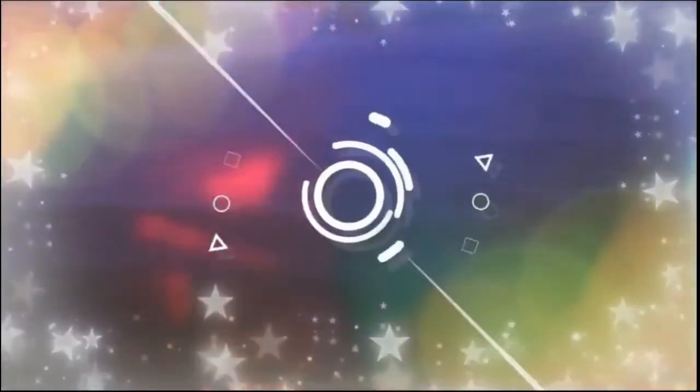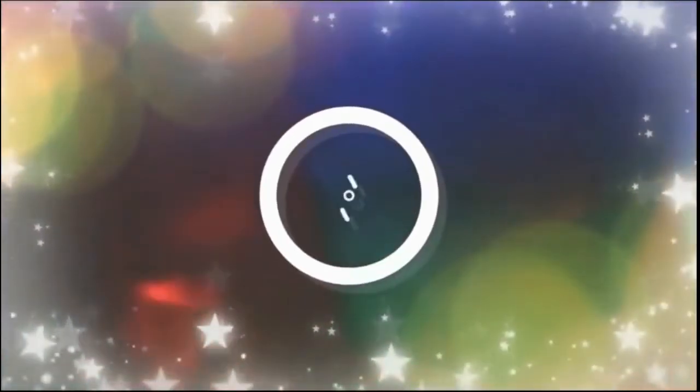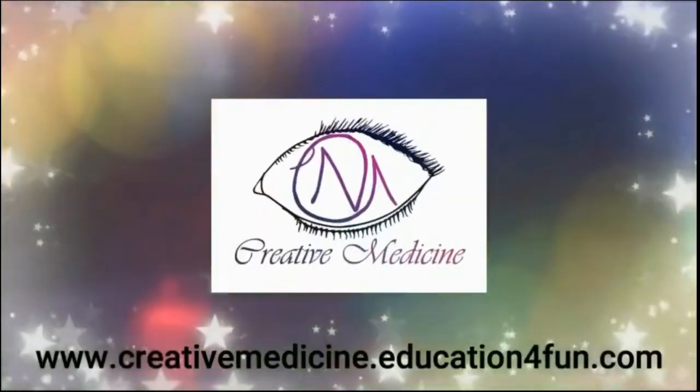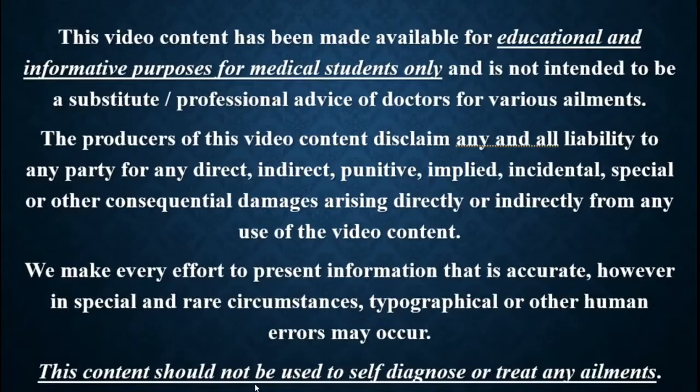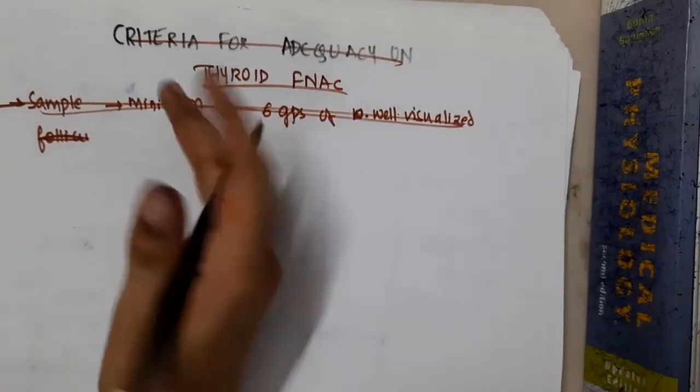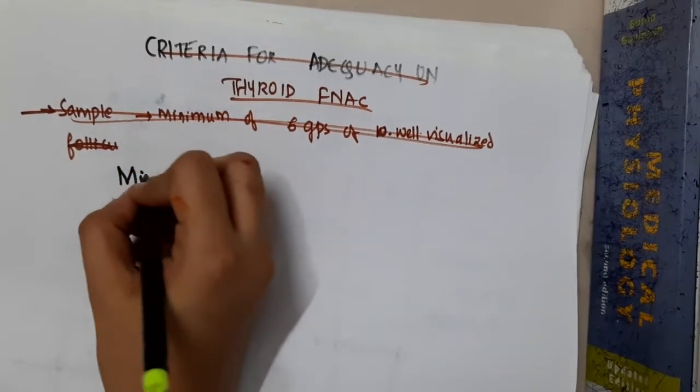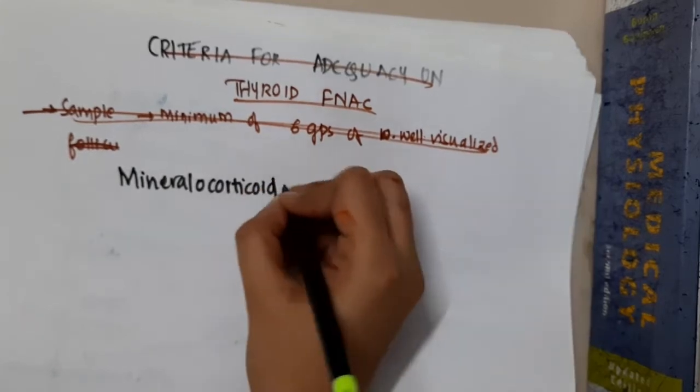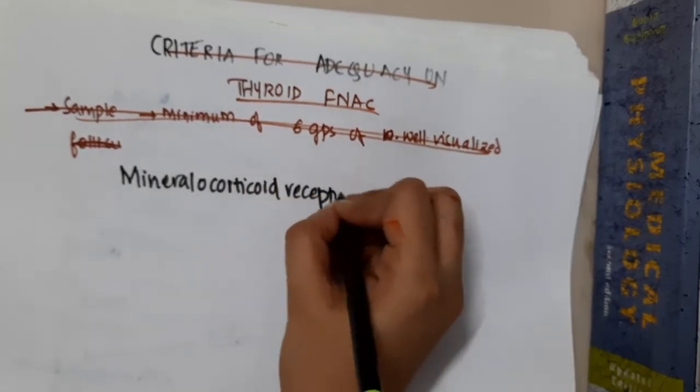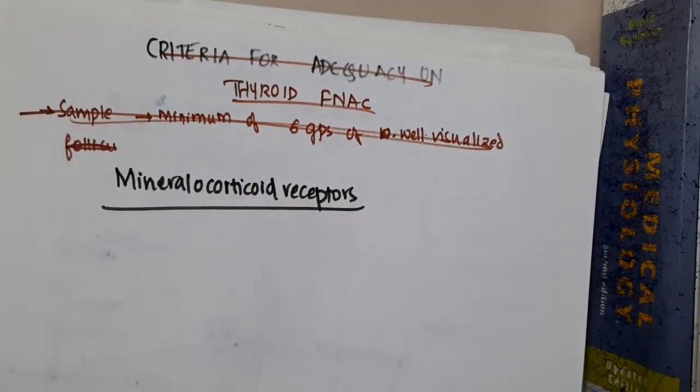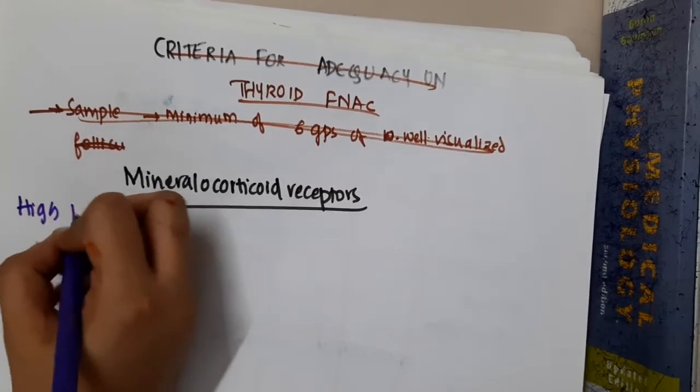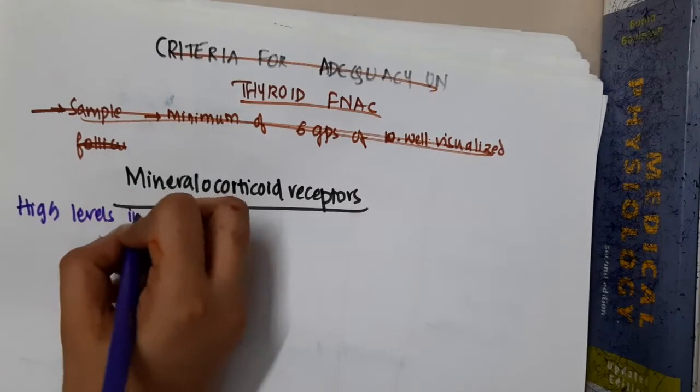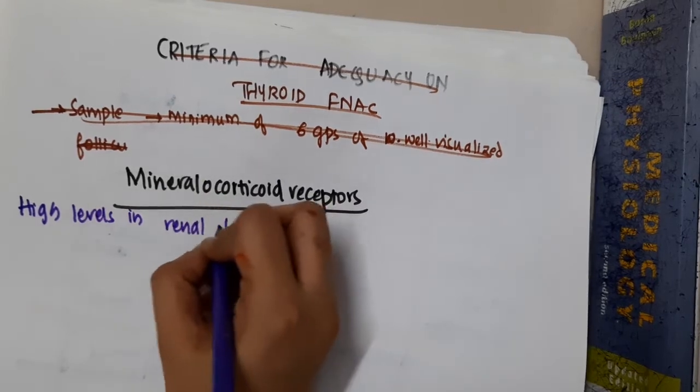Hello friends, welcome to Creative Medicine. In this lecture we will learn about mineralocorticoid receptors. If you were asked where are mineralocorticoid receptors present, they are present in high levels in renal tubules, obviously because their action is in renal tubules.